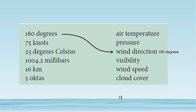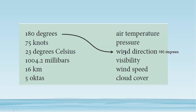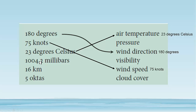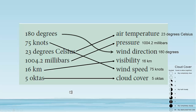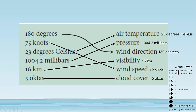Okay, no rednecks here I hope. Let's start out with 180 degrees — that refers to wind direction. And then 75 knots refers to wind speed. It would be 23 degrees Celsius air temperature, and 1,004.2 millibars — that would be pressure, air pressure. 16 kilometers gives us visibility, and then 5 oktas — I've never heard of that before — refers to cloud cover. So here are the different symbols and the different scales, and oktas — eighths — so 5 would be a half-cloudy sky.